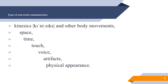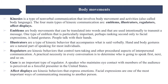There are seven types of non-verbal communication: first, kinesics and other body movements; second, space; third, time; fourth, touch; fifth, voice; sixth, artifacts; and seventh, physical appearance. Now let's focus on body movements.